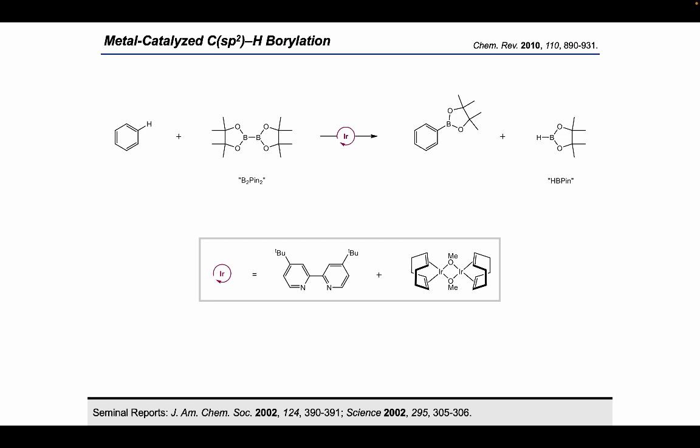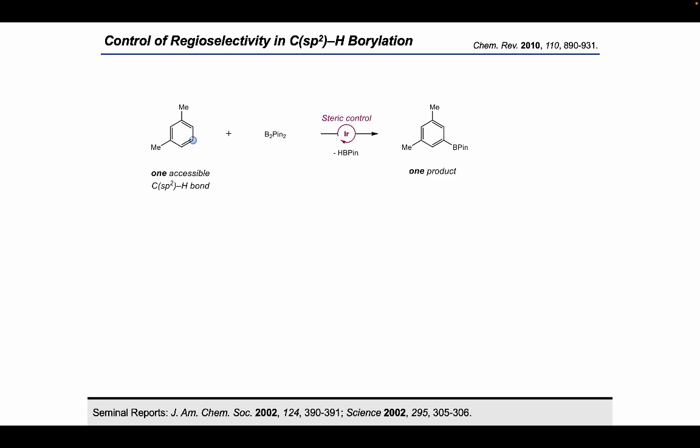This generates a synthetically versatile organoboronate, which can then be used to generate linkages between that carbon atom and many other common functional groups. A stoichiometric borane byproduct, HBPin, is also generated. By far the most commonly used and well understood catalysts are formed from the combination of a bipyridine ligand and an iridium-1 precursor. This iridium catalysis was developed independently by the groups of John Hartwig and Mitch Smith, and continues to influence the design of C-H borylation catalysts to this day.